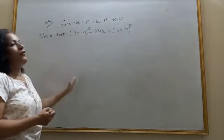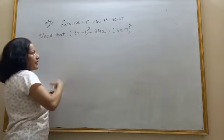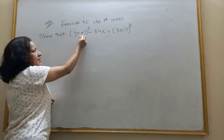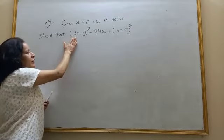First I will solve left hand side. Here this is 3x plus 7 whole square. Means first term plus second term whole square. So which identity I will use here?